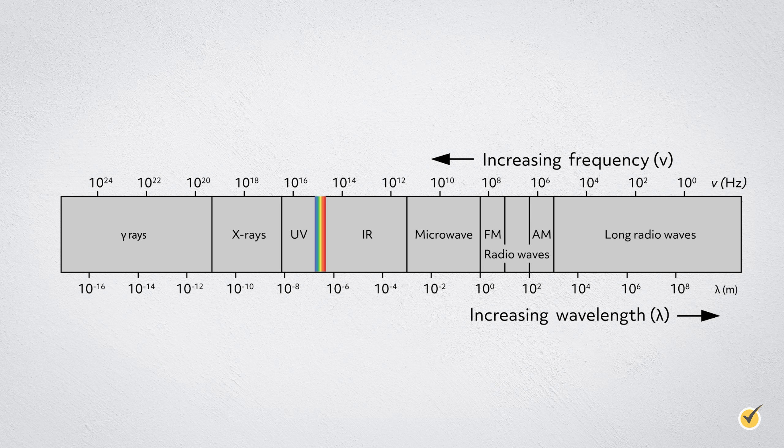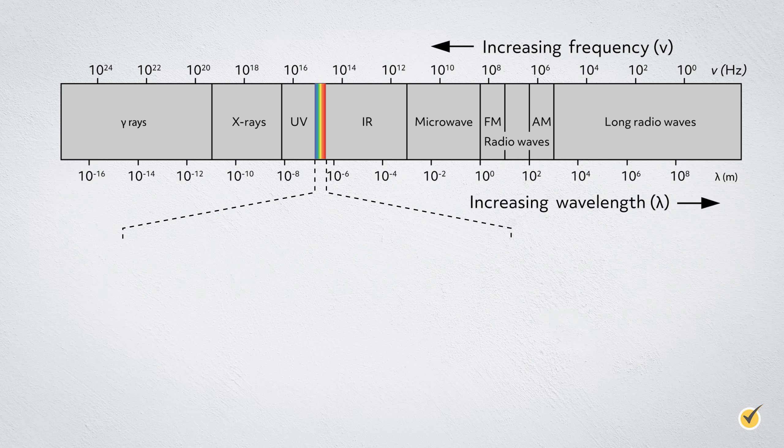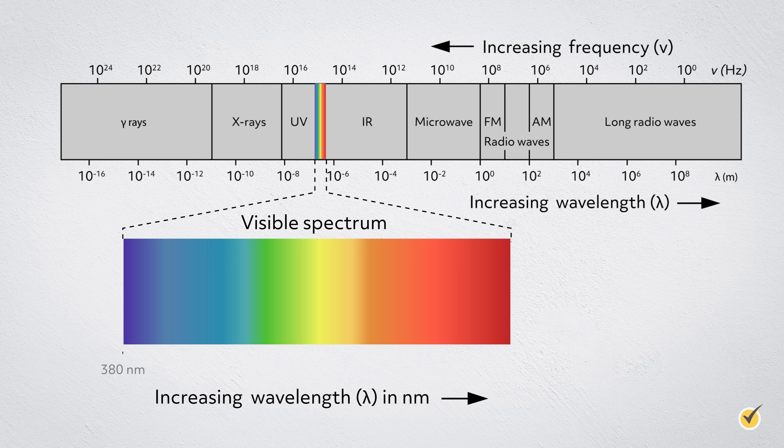As you can see, the spectrum is categorized into several ranges from gamma rays all the way to long radio waves. Visible light wavelengths range from about 380 to 760 nanometers, or 3.8 times 10 to the negative 7th meters to 7.6 times 10 to the negative 7th meters. The visible light spectrum is further divided by color, with red light at the long wavelength end and violet at the short wavelength end.